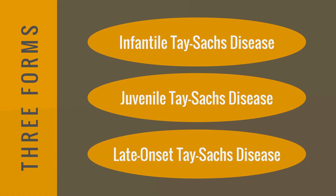Late onset Tay-Sachs disease is the rarest form, presenting symptoms in adulthood. Individuals with late onset Tay-Sachs may experience the slowest progression of symptoms, and this form does not always impact life expectancy. Understanding these variations is crucial as they impact the age of onset, severity of symptoms, and life expectancy.